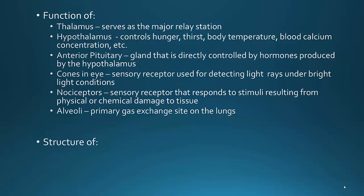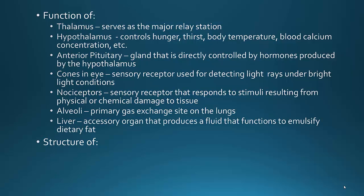The alveoli are part of the lungs and are the primary place for gas exchange. They are wrapped with blood vessels, allowing oxygen and carbon dioxide to exchange back and forth from the blood. The liver is an accessory organ of the digestive system and produces bile, a fluid that functions in emulsifying dietary fat. However, the gallbladder stores it — so don't get those confused. The liver is what actually makes it.